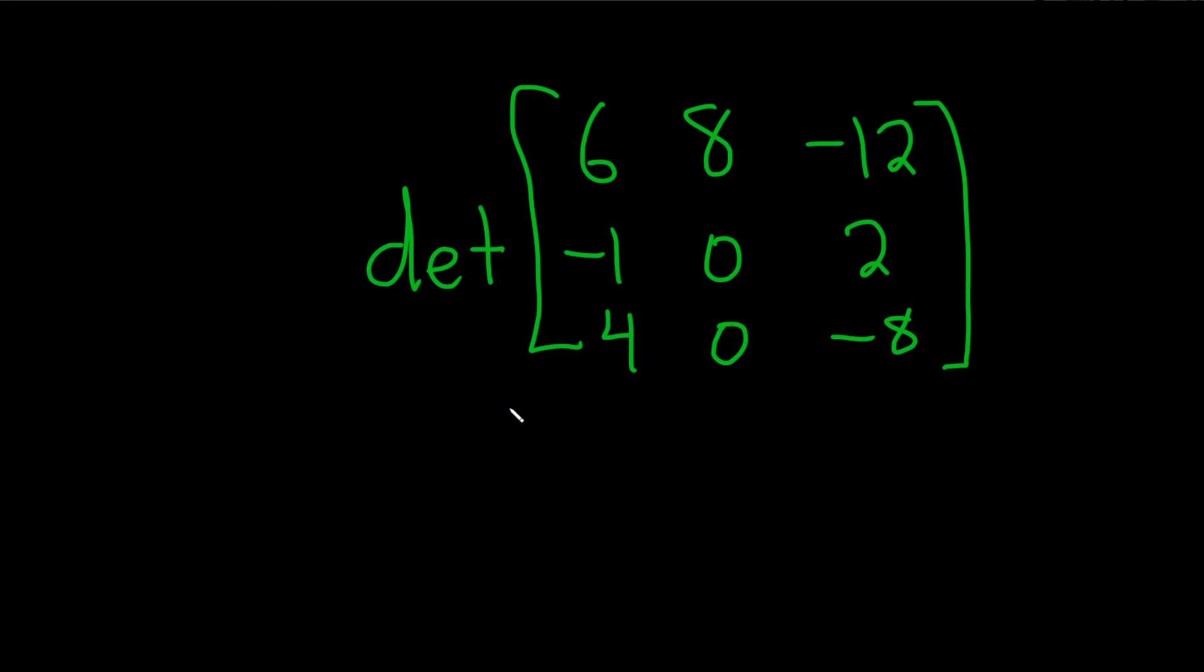So one easy shortcut is if you have an entire row or column of zeros, then the answer is zero. In this case, that's obviously not the case.